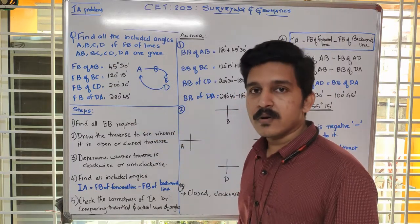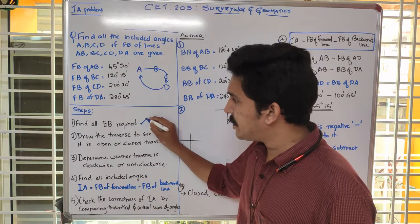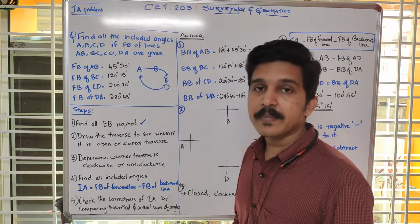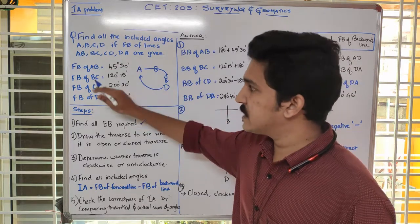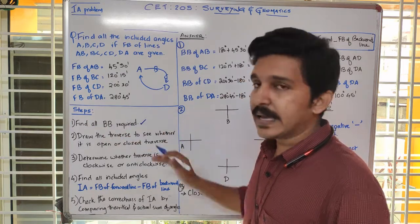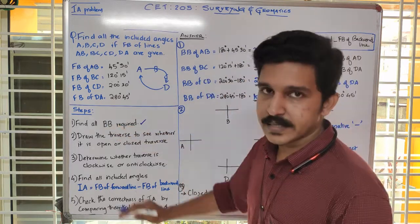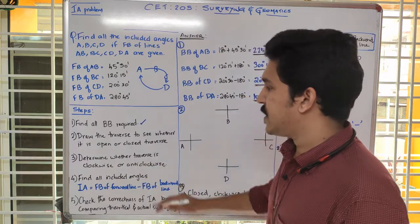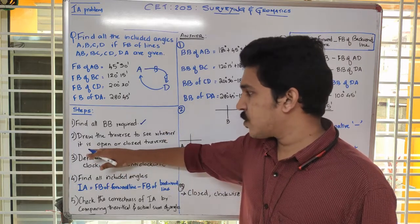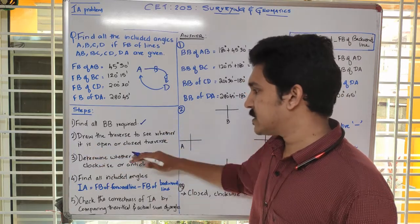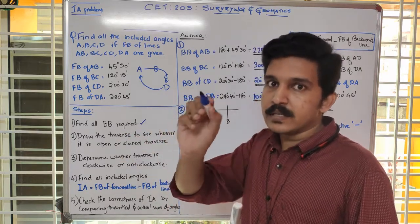Let us discuss the steps involved in solving this problem. The first step is to find all the back bearings that are required. We are given fore bearings, but sometimes we also require the back bearings, so it is better to keep everything handy. The second step is to draw the traverse — the figure — so that we can see whether it is an open traverse or a closed traverse.